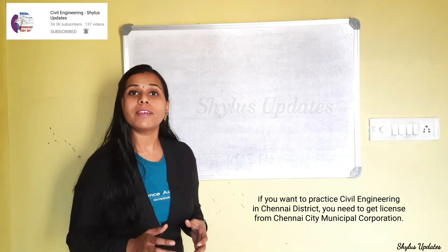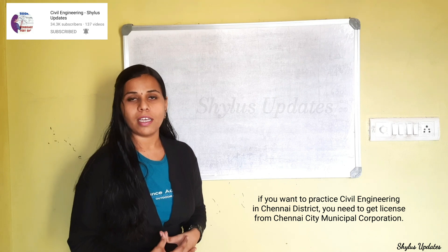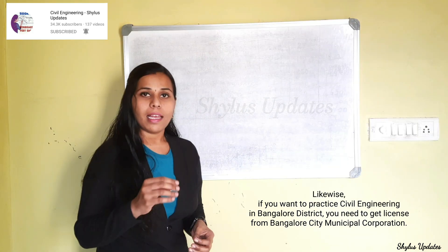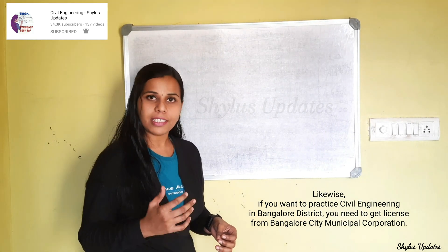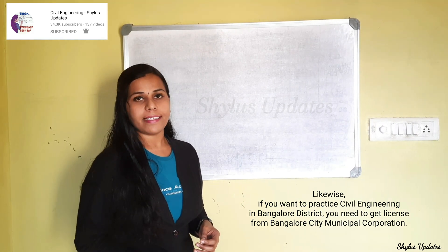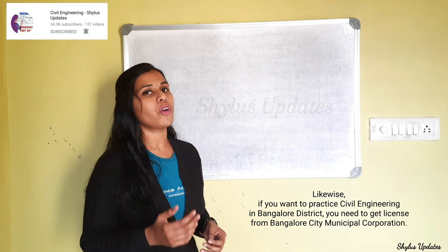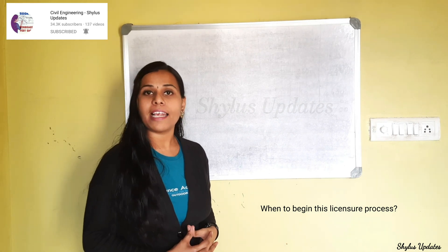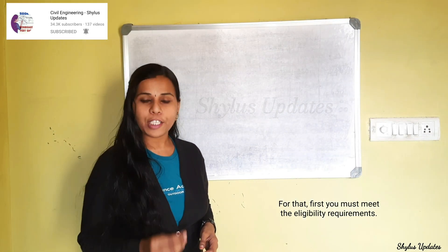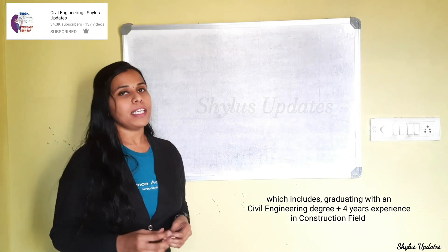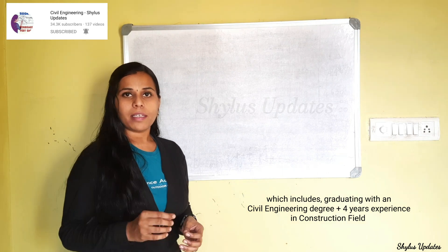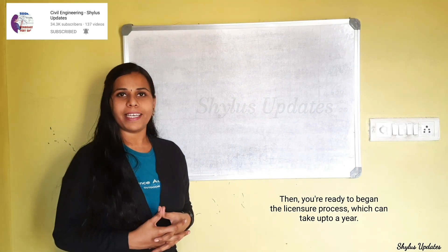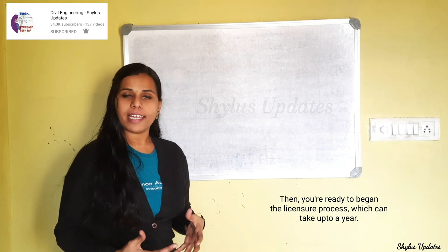Even to demolish any building, we need a license — only then can we give approval to demolish a building. If you want to practice civil engineering in Chennai district or Bangalore district, you need to get a license from the respective city municipal corporation. To begin the licensure process, you must meet the eligibility requirements, which include graduating with an engineering degree plus four years of experience in the construction field. The licensure process can take up to a year.